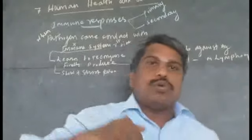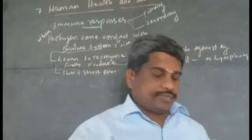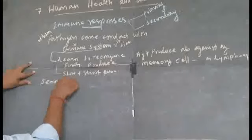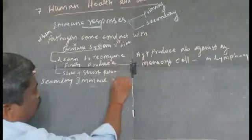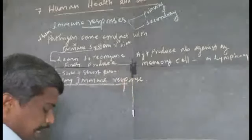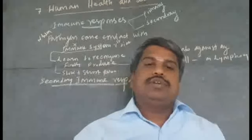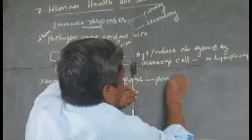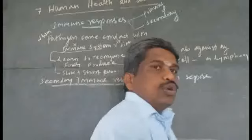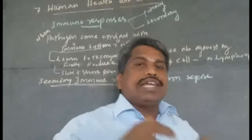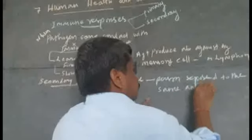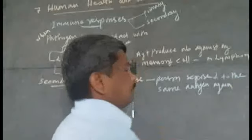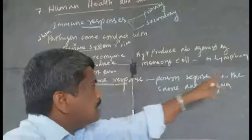The primary immune response involves a very slow, short period. Now, the secondary immune response: what is the secondary immune response? It occurs when a person is exposed to the same antigen again. The person is re-exposed to the same antigen, and this results in a secondary immune response.